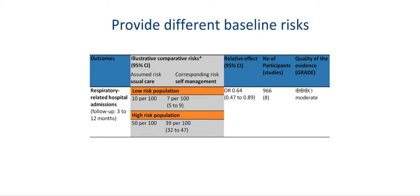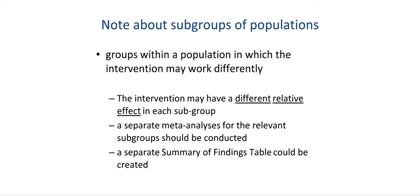Baseline risk information may come from either trials or good observational studies. Review authors should choose representative risk populations — for example, a baseline risk of 10 per 100 in the low-risk population and 50 per 100 in the high-risk population. Review authors may also identify groups within a population in whom the intervention may work differently, with a different relative effect in each subgroup — that is, an interaction by subgroup. A separate meta-analysis for the relevant subgroups should be conducted under those circumstances.